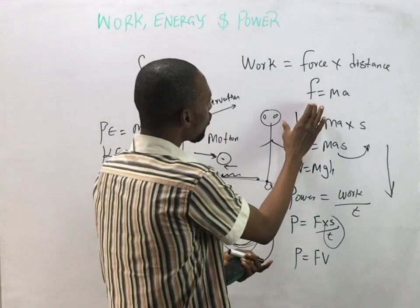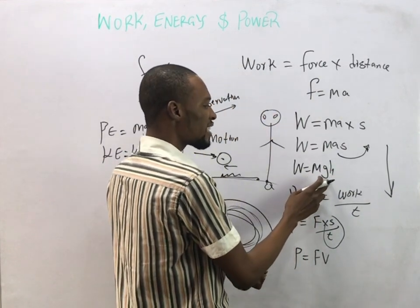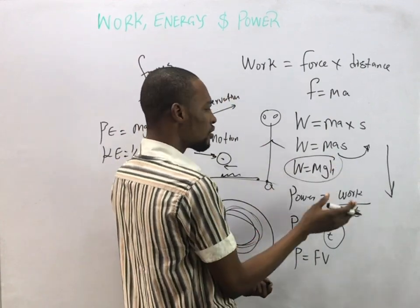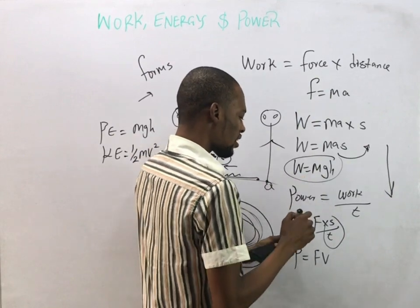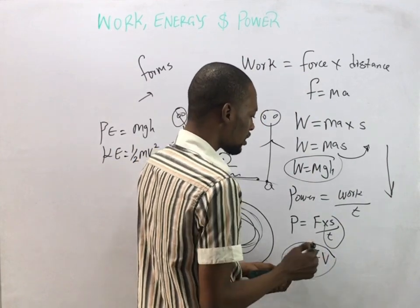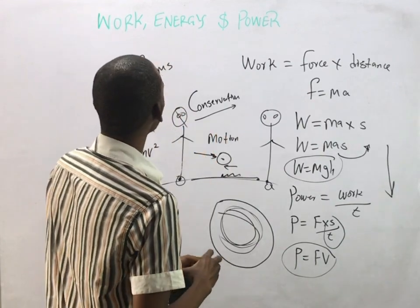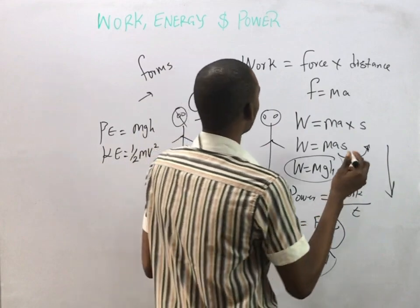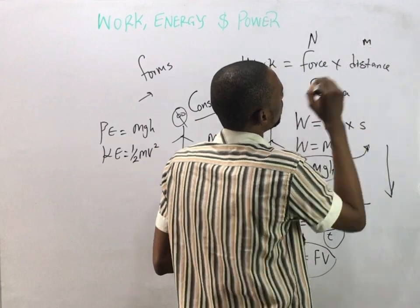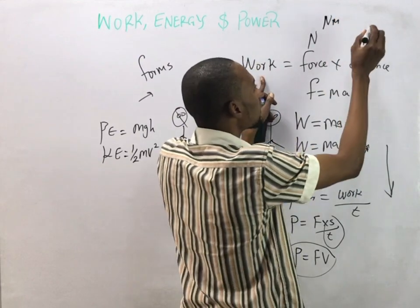In some questions they will give you mass and ask you to find height using work done equals mgh. This equation combines power, force, and velocity, while the kinetic energy equation relates mass and velocity squared. The unit of work is force times distance — force is in Newtons and distance is in meters — so the unit of work is Newton-meter, also known as Joules.